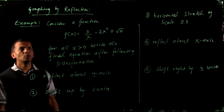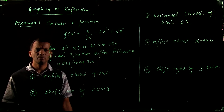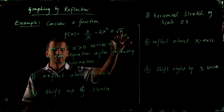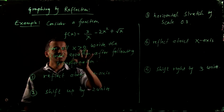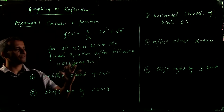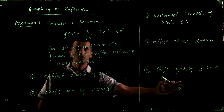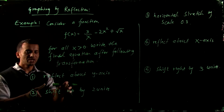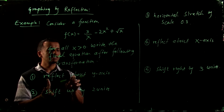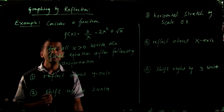Let's take one example where the given function is f(x) equals 3 over x minus 2x squared plus square root of x. First, what is the domain of this function? x cannot be 0, otherwise we get infinity, and x cannot be negative, so the domain is all x greater than 0. We want to write the final equation after applying 5 different transformations in order. The first transformation is to reflect about the y-axis, so we replace x by negative x.